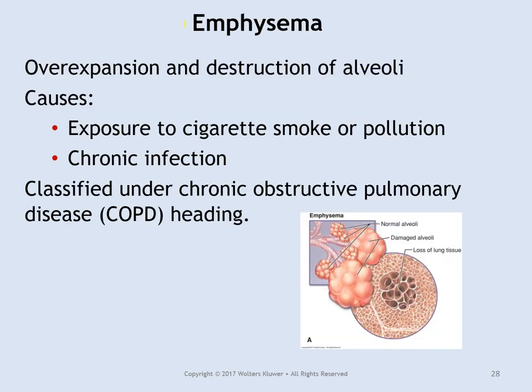Emphysema is when the walls between the alveoli — the sacs at the terminus of the bronchioles — break down. You have a lot less surface area for efficient gas exchange, so CO2 and O2 aren't exchanged properly. Cigarette smoking is the main cause of emphysema, and it is one of the COPDs or chronic obstructive pulmonary diseases.